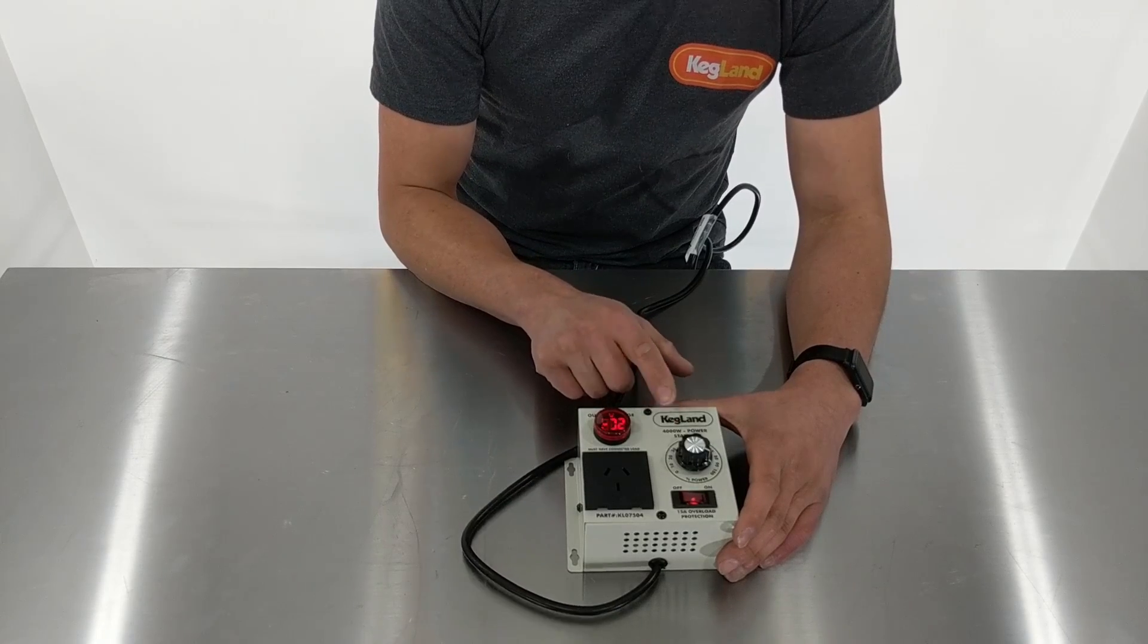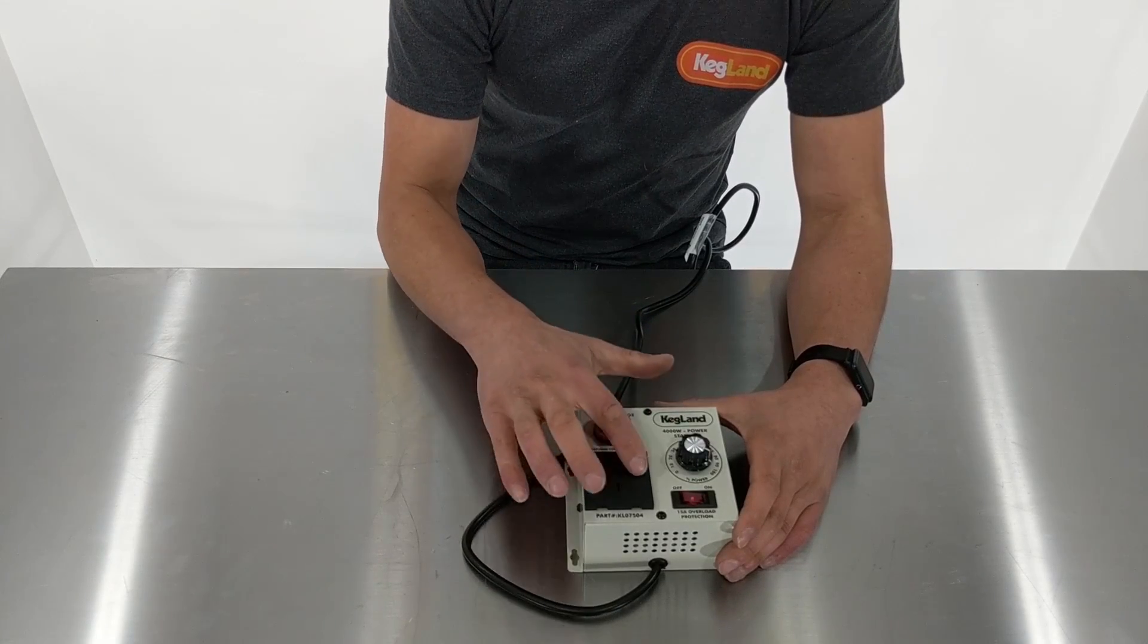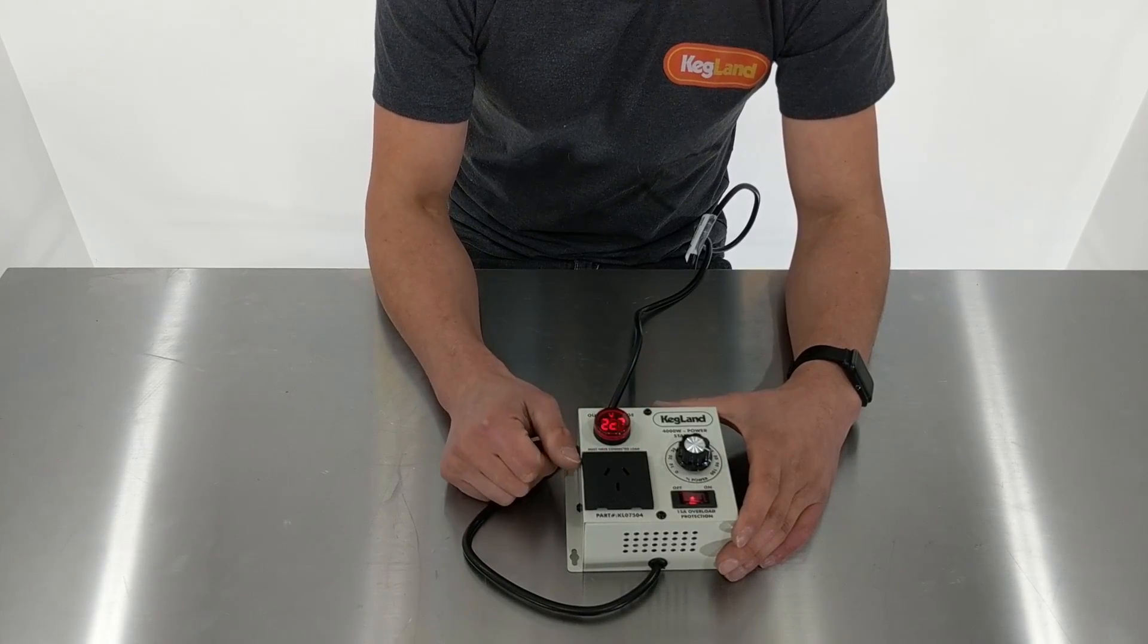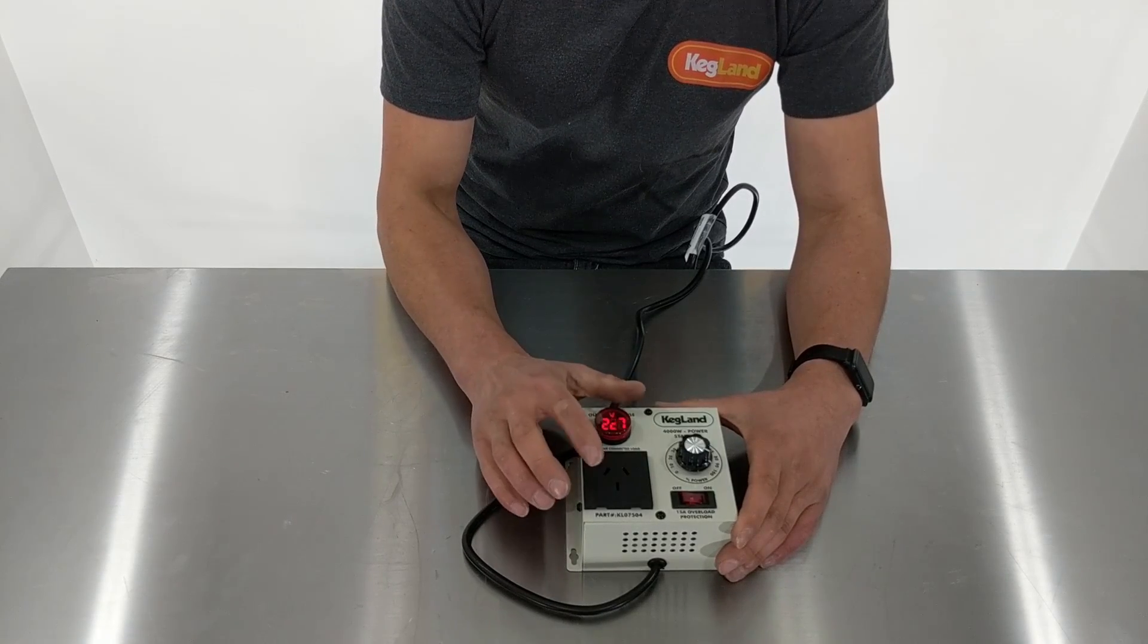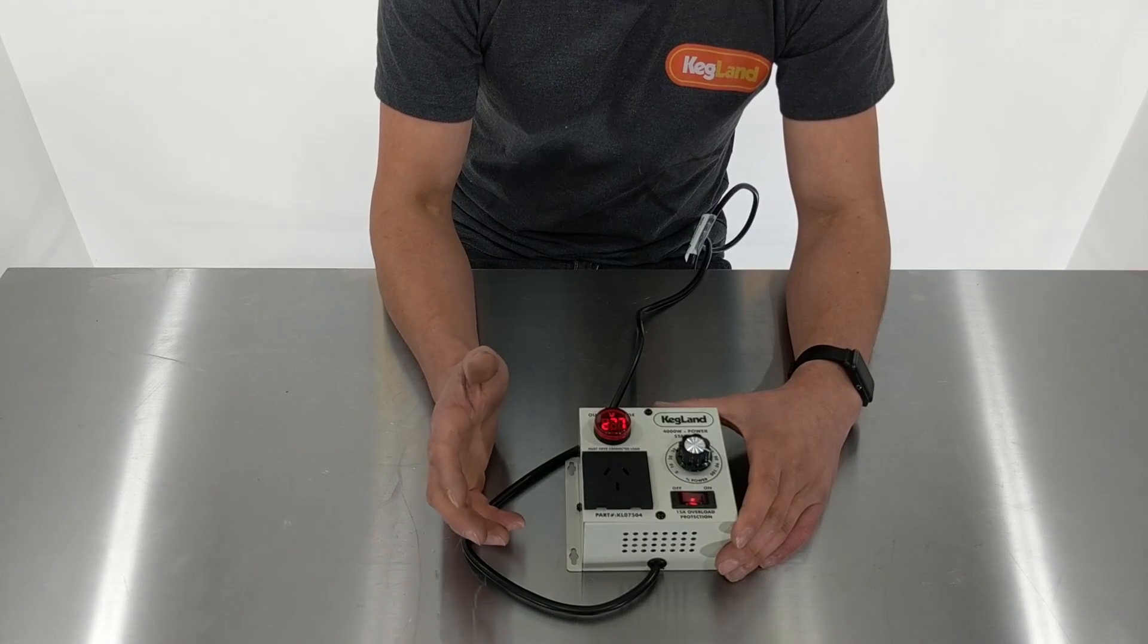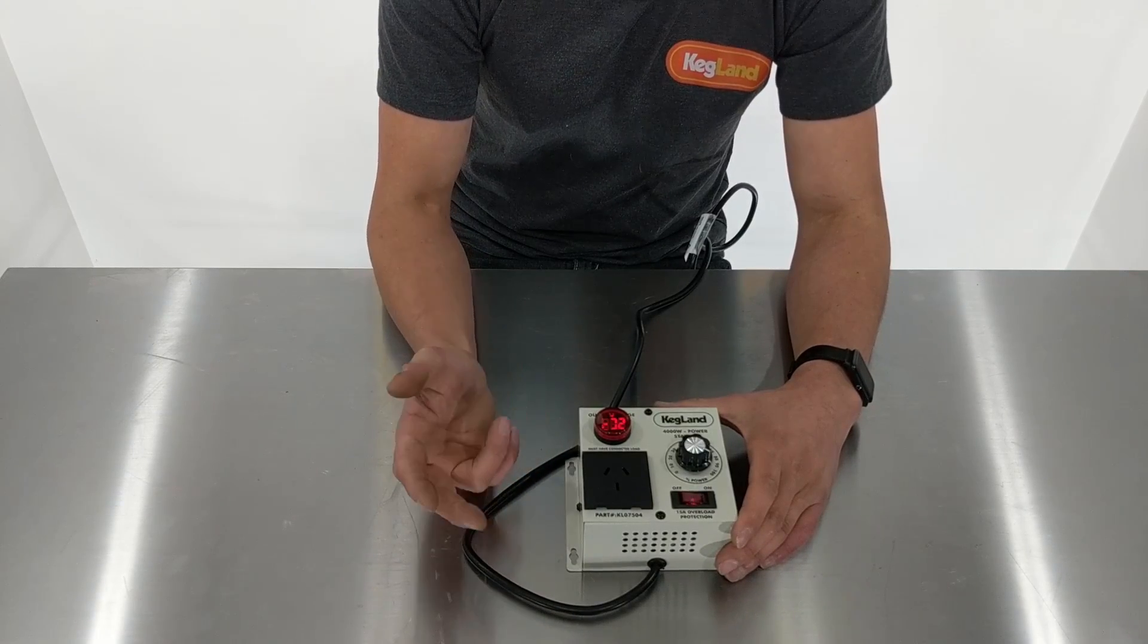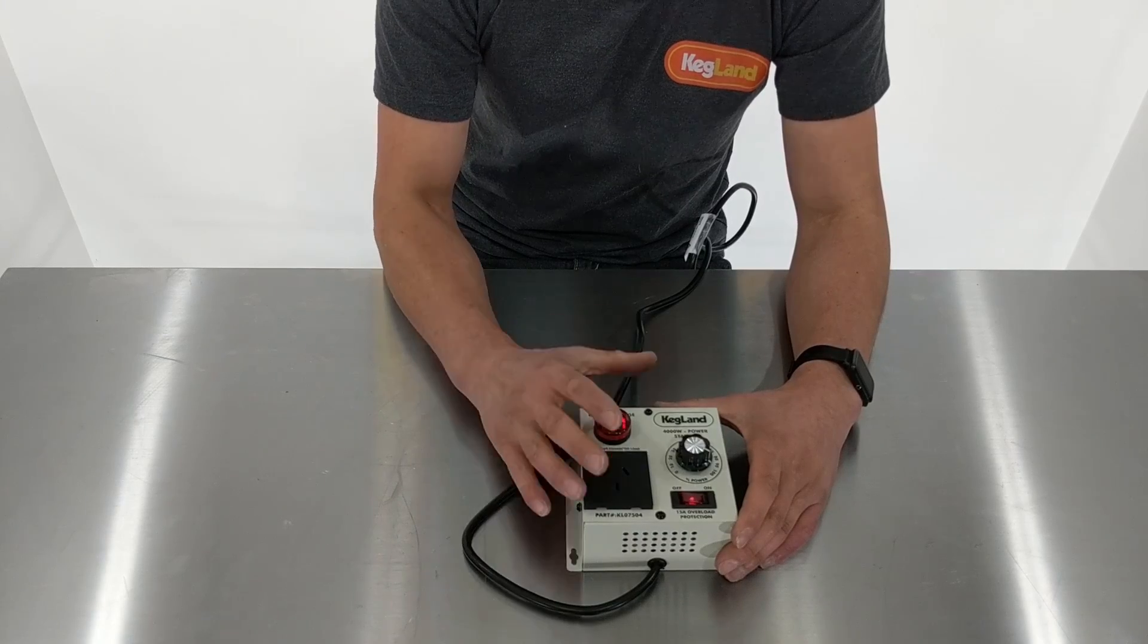The other thing you'll notice is we say 4,000 watts. Clearly, because it's got a 10-amp socket on here, you can only go up to 10 amps worth of things you're going to plug in here. So one heating element - you couldn't plug two of our 2,200-watt heating sticks in here. You can only plug in one per device.